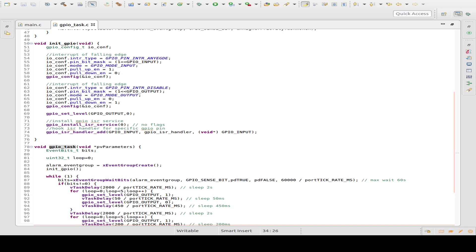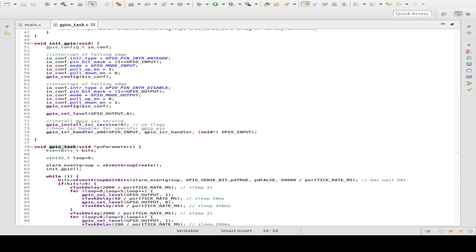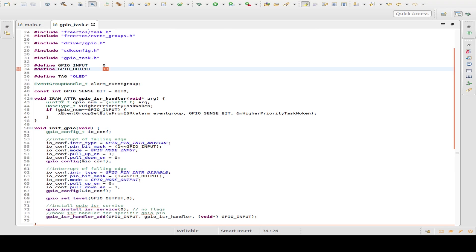Then we configure our output pin and we set it to zero. So the output pin is initially low. Then we install the interrupt service routine. Then we set the interrupt handler for our GPIO input pin. And have a look at the interrupt service handler. The interrupt service handler, if we have a change on the input pin, just set the sense bit.